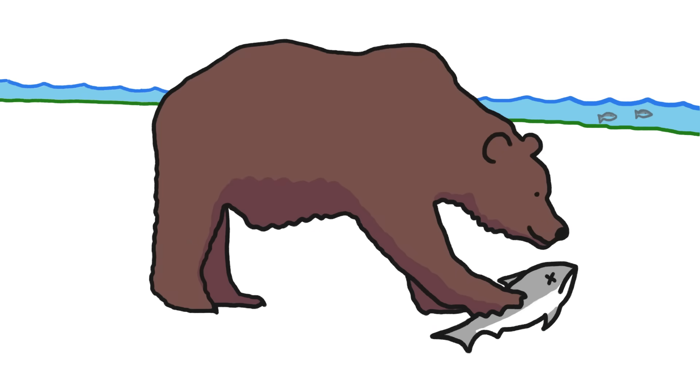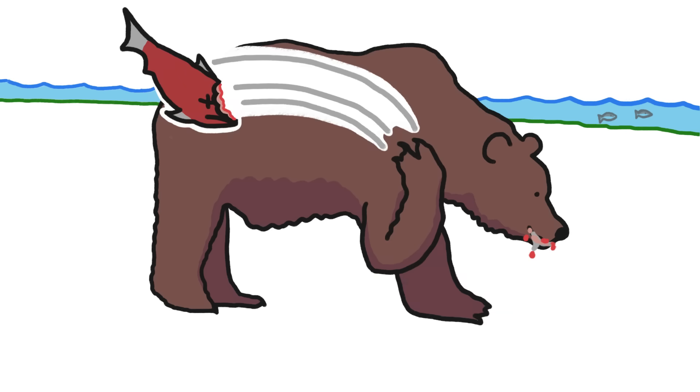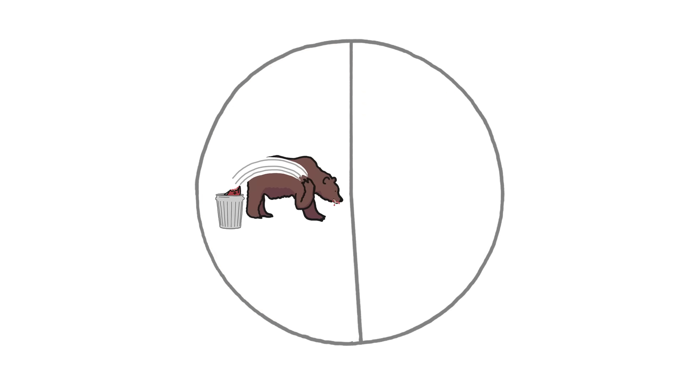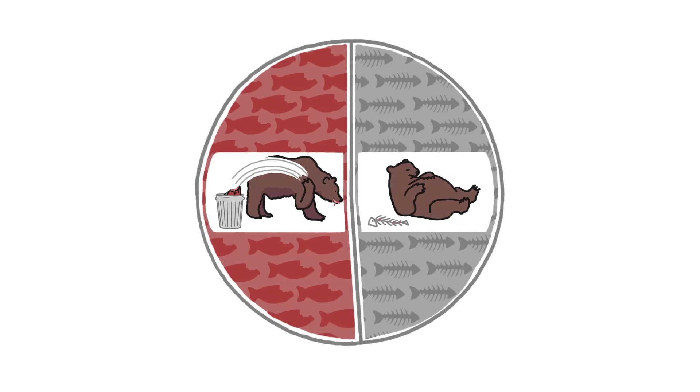When a grizzly bear catches a salmon, she'll first peel off and gobble up the skin, then nom the brain. But then she's likely to abandon the rest of the fish, several kilograms worth, and go back to the river to catch another. On average, bears abandon about half of their yearly haul.